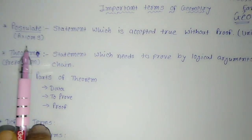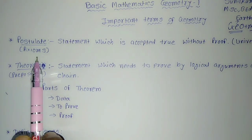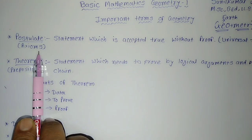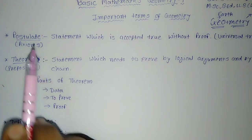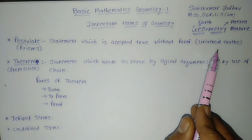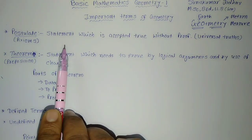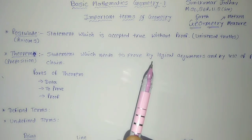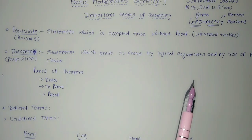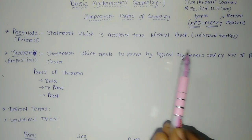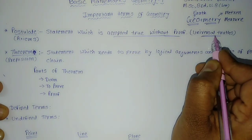The first term of geometry is postulate. What do you understand by postulate? This word you may have heard in geometry. It is also called an axiom in geometry. A postulate is a statement which is accepted as true without any proof — that is what we call a universal truth. It is a self-evident statement which we accept as true without any argument or proof.